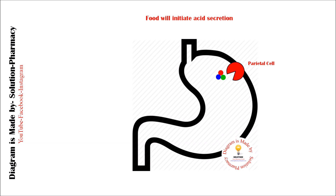The parietal cells of the stomach secrete hydrochloric acid (HCl) into the stomach. This hydrochloric acid enters the digestive juice, which helps digest food material in the stomach.